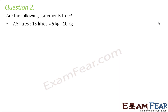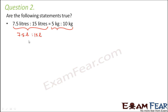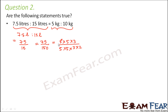Question number 2: are the following statements true? 7.5 liters is to 15 liters equals 5 kgs is to 10 kgs. Let's find the value of each ratio. For 7.5 liters to 15 liters: written as 7.5 divided by 15, we express 7.5 as 75 by 10, giving 75 over 150. By prime factorization, 75 equals 5 × 5 × 3 and 150 equals 5 × 5 × 3 × 2, so cancelling common factors gives 1 by 2.